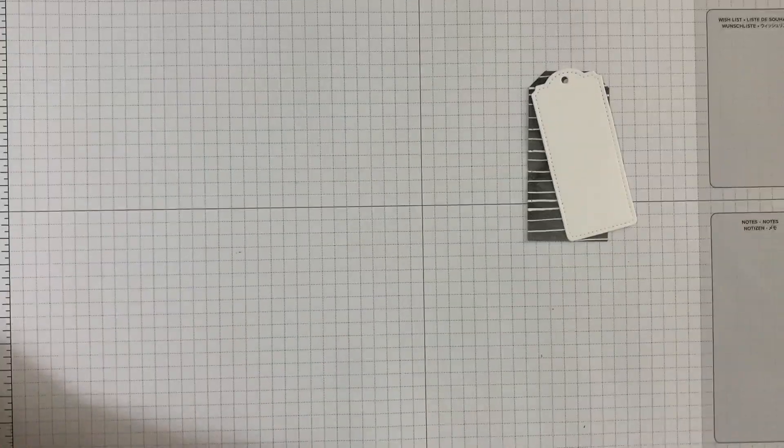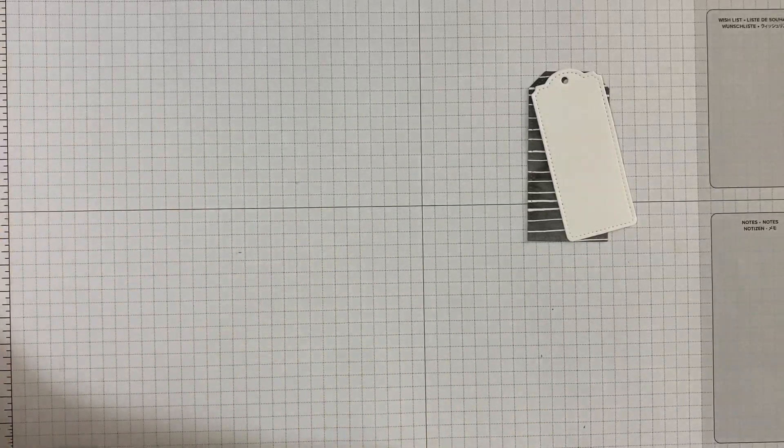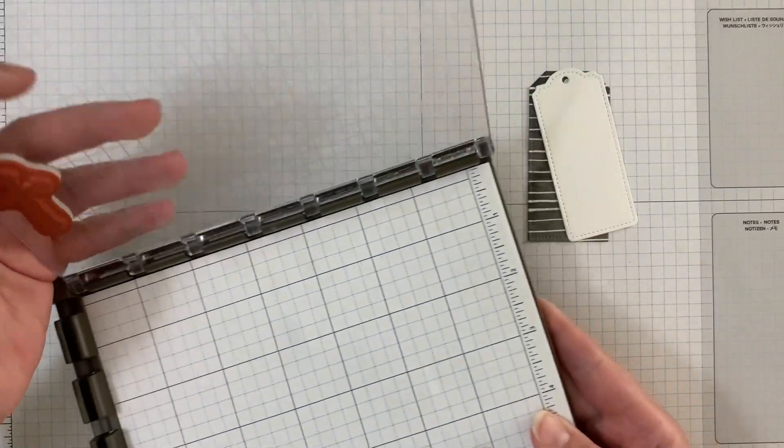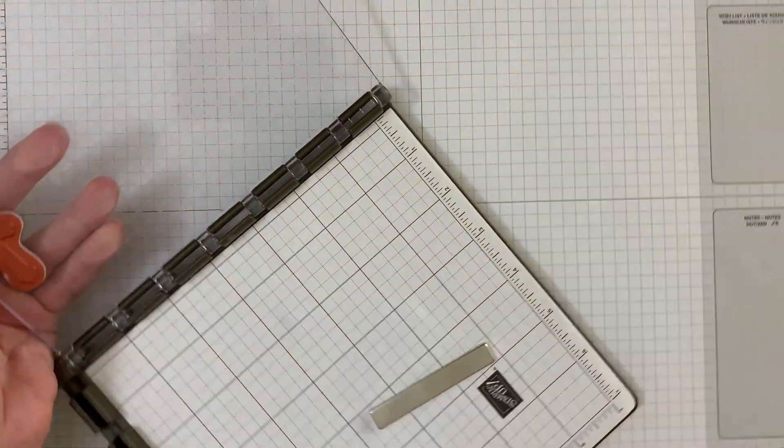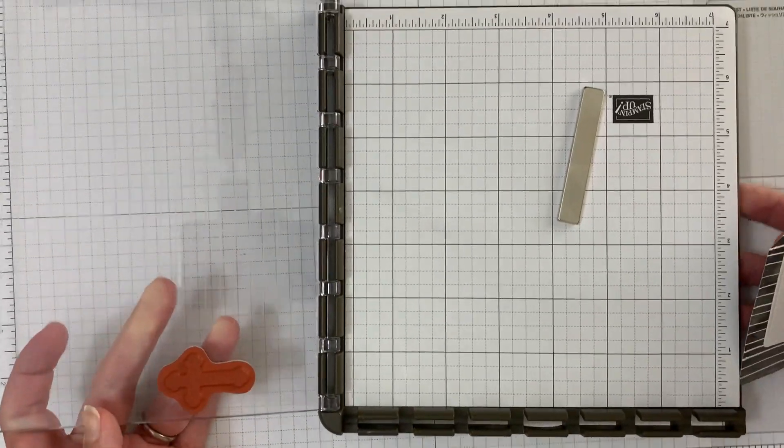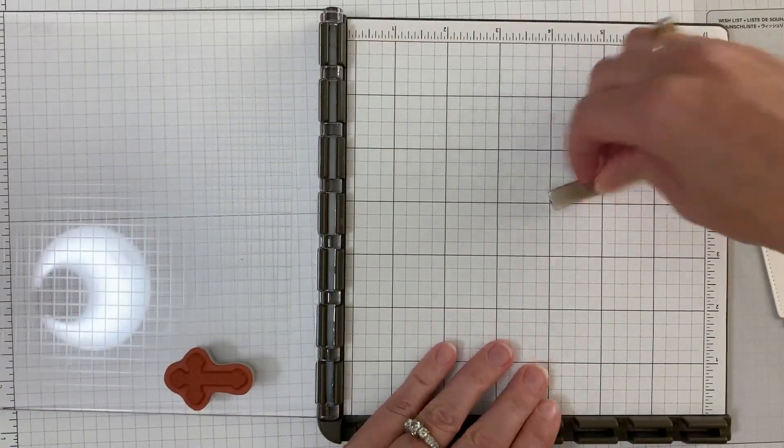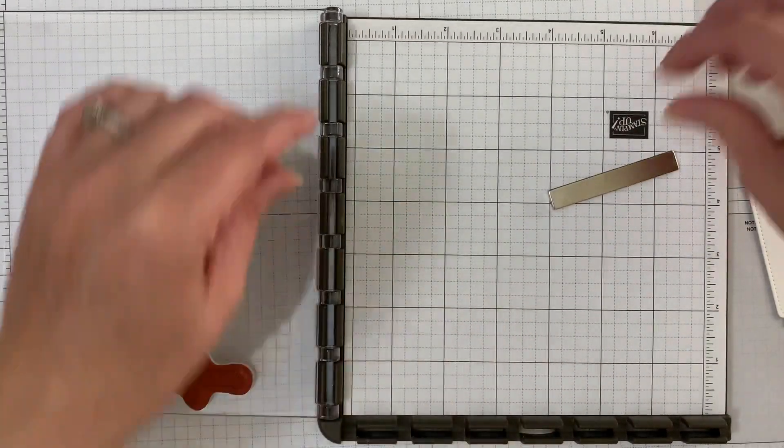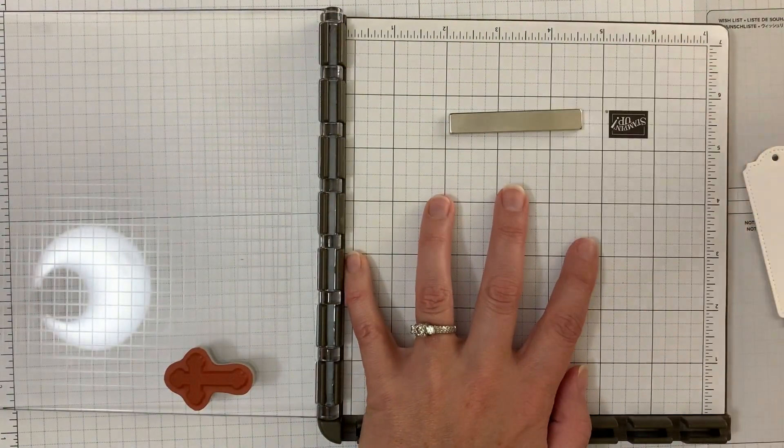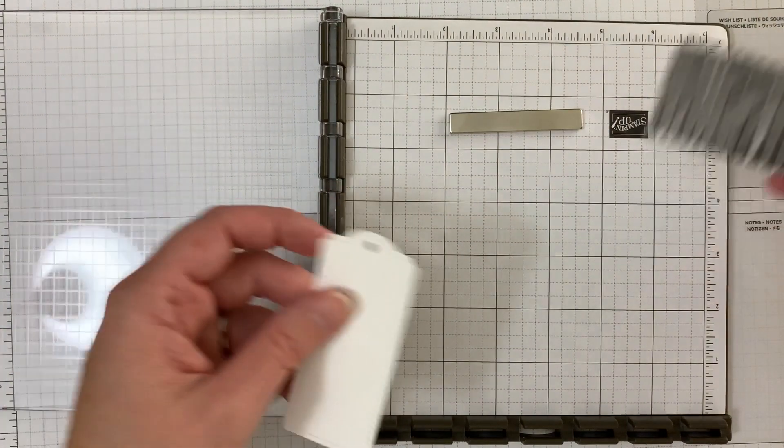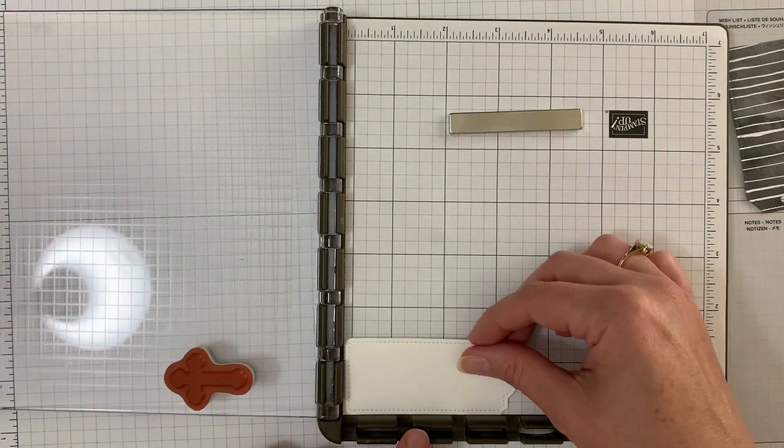So we did that and I mounted the little stamp we used on my stamparatus so that me and the girls could just quickly get them all out. So one of us was on the die-cutting machine cutting out one of each of these, and then the other one was stamping.